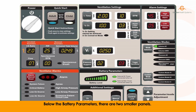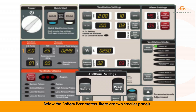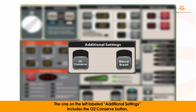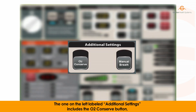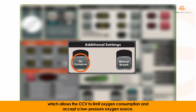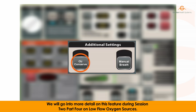Below the battery parameters, there are two smaller panels. The one on the left labeled additional settings includes the oxygen conserve button, which allows the CCV to limit oxygen consumption and accept a low pressure oxygen source. We will go into more details on this feature during session 2, part 4 on low flow oxygen sources.